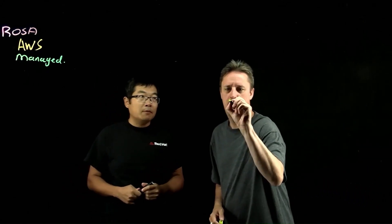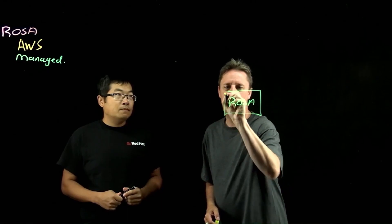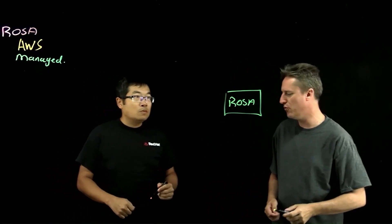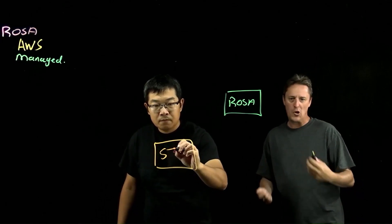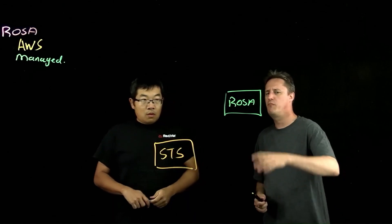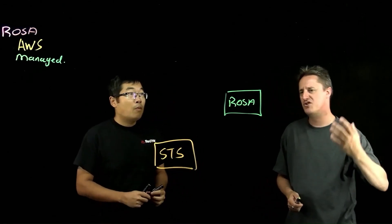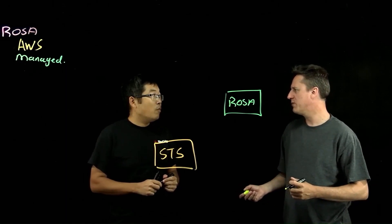Okay. So we've got a ROSA cluster, and that ROSA cluster is going to talk to AWS's STS. STS is a token vending service. So every time the ROSA cluster wants to touch something like an AWS service, what would some of those AWS services be?